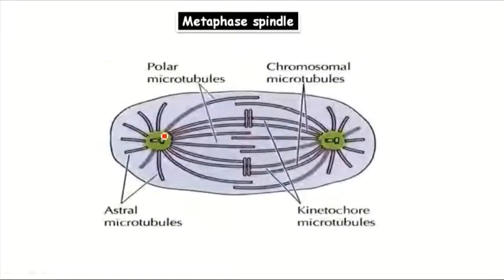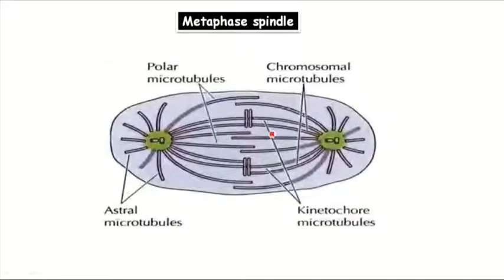In late prophase, the breakdown of the nuclear membrane allows some microtubules to attach to the chromosome at the kinetochore. The kinetochore is a region of the centromere where microtubules attach to the chromosome.